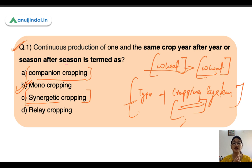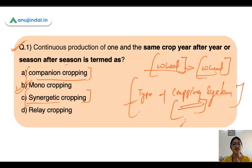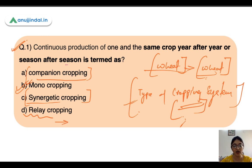In synergetic cropping, the two crops are in synergy with each other, meaning the yield will be more when they are grown together — they help each other and yield is increased. In relay cropping, just like a relay race where one member passes the baton to another, when one crop is fully developed or near maturity, you sow the second crop at that time. This is known as relay cropping. Remember all types of cropping systems — this is an important area.